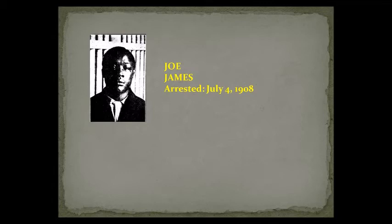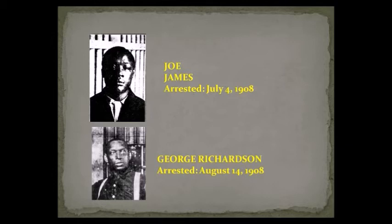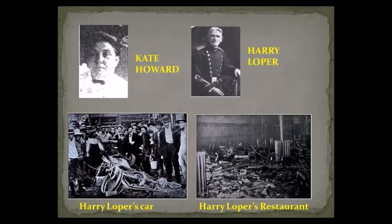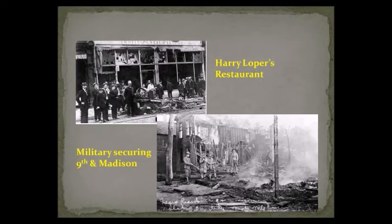Later in the month, George Richardson was also arrested when the newspaper falsely reported that he had raped Mabel Hallam — because that's what she falsely said. Then there was Kate Howard, a house room operator publicly known not to like the black community. What she did was fire up the crowd and tell them that a local business owner named Harry Loper helped the sheriff get the two guys out of town in his automobile. The crowd turned around, went right back into town, destroyed that guy's automobile, and also destroyed his restaurant.